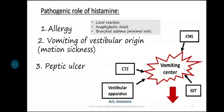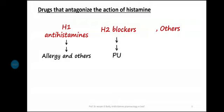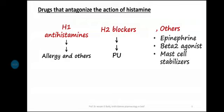Antihistamines are classified into H1 antihistamines and H2 blockers. Usually the term 'antihistamine' denotes H1 antihistamines, while H2 blockers are specifically called H2 blockers. H1 antihistamines are used mainly for allergic conditions, and H2 blockers are used for peptic ulcer.